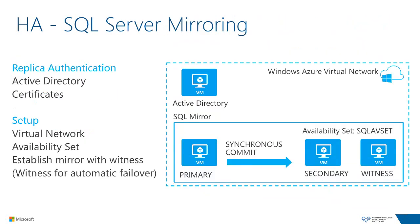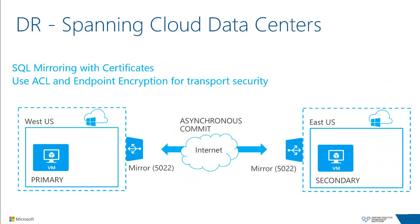SQL Server mirroring is still a viable option. The biggest benefit over an Always On availability group is the ability to use certificates as an authentication method instead of depending on Active Directory. High-level requirements include deploying the virtual network, setting up Active Directory or certificates, and establishing the mirror — putting nodes into an availability set as well. SQL mirroring supports mirroring across the public internet using endpoints with certificate authentication, though you'd want to use access control lists and endpoint encryption for transport security since the data is flowing publicly.